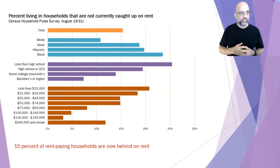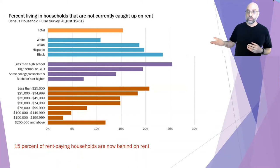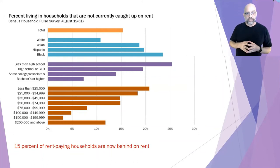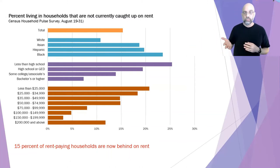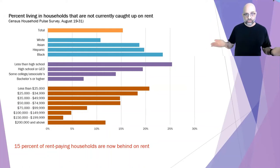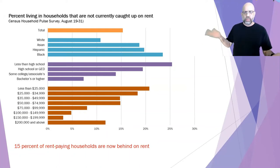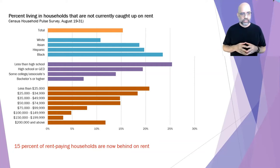Where has this crisis taken us? The Census Bureau asks: are you currently caught up on rent? 15% of people said they're not caught up on rent. It's highest among Black households, lower among Hispanic and Asian, and lowest among white. Again, we see the same education and income gradient — this crisis of food, income, and housing.